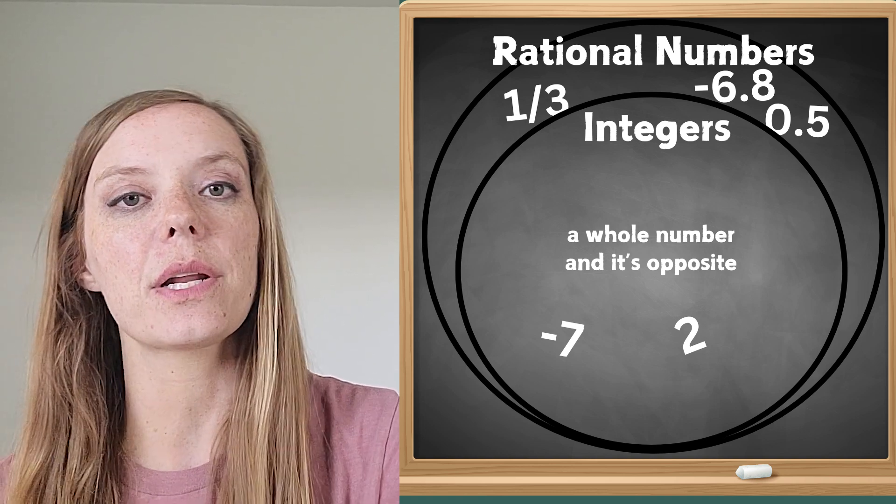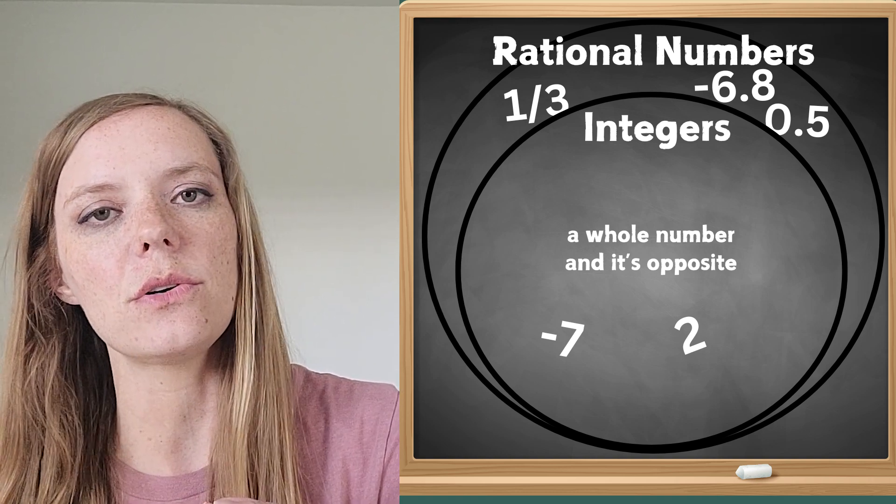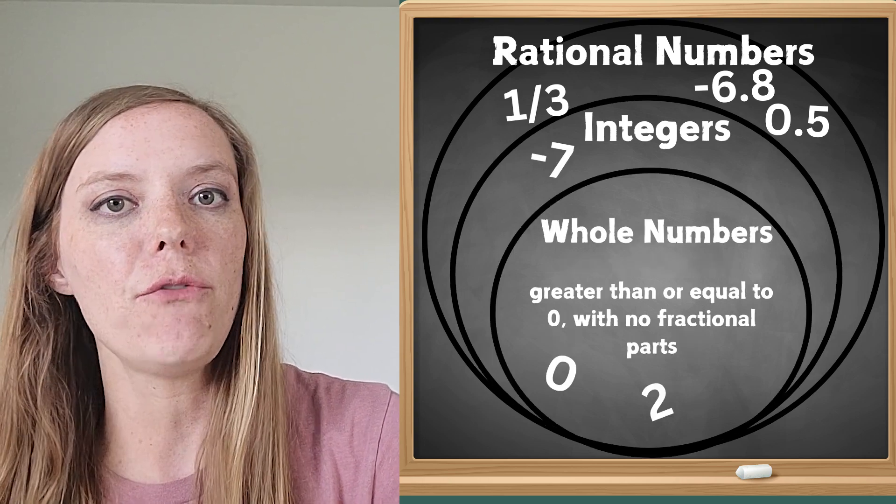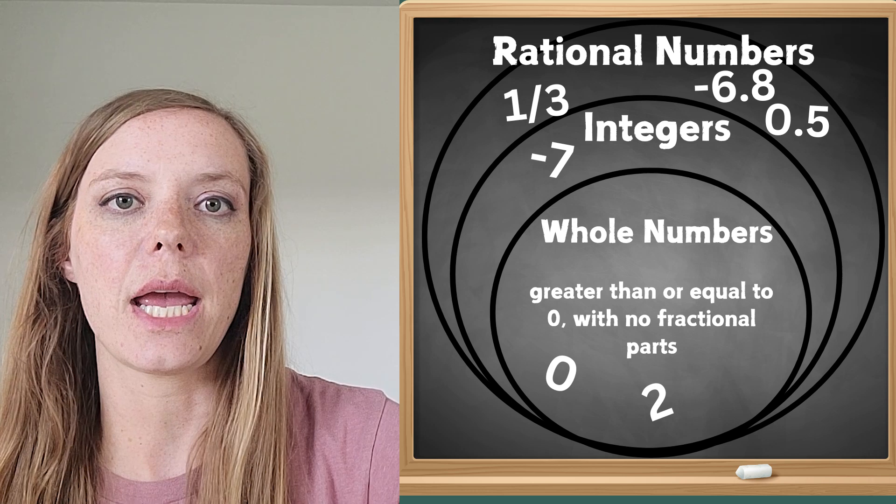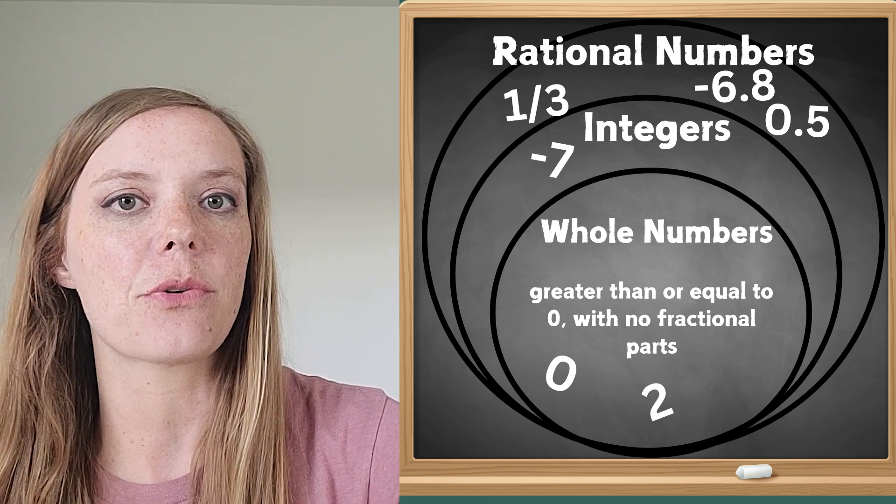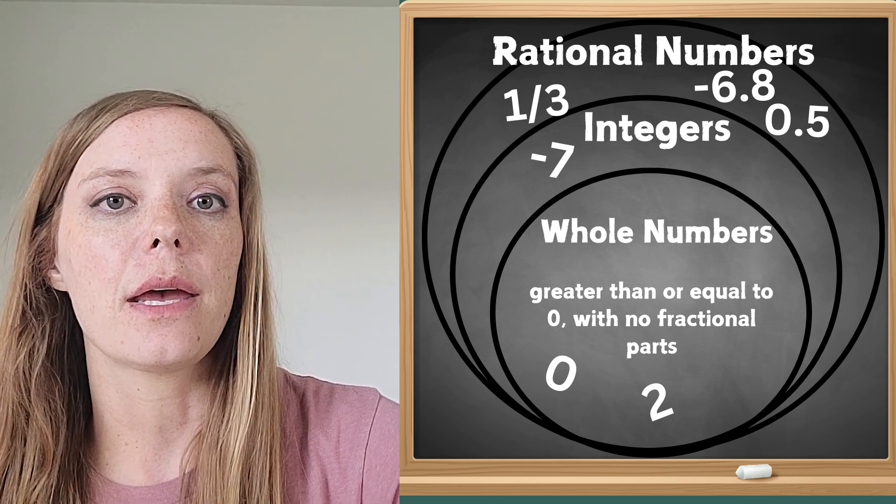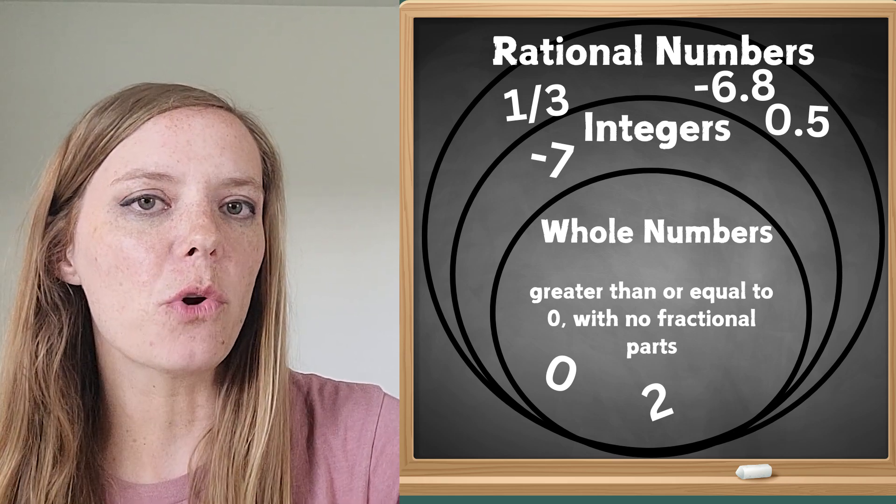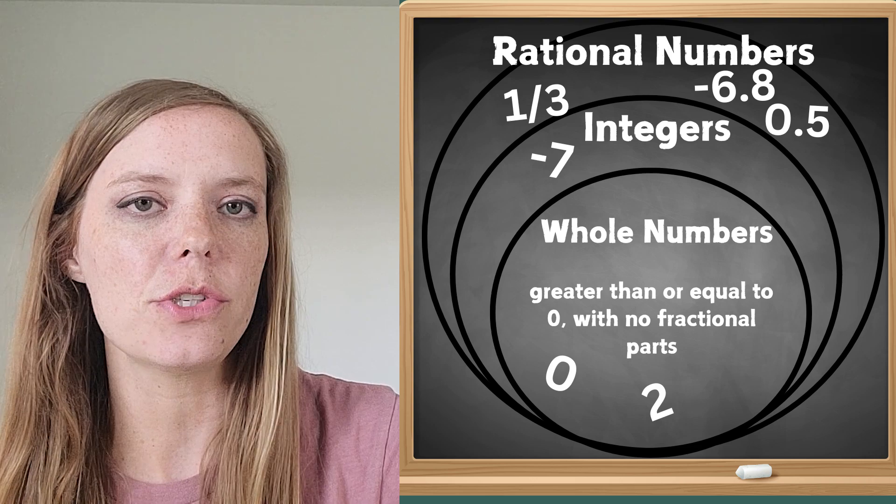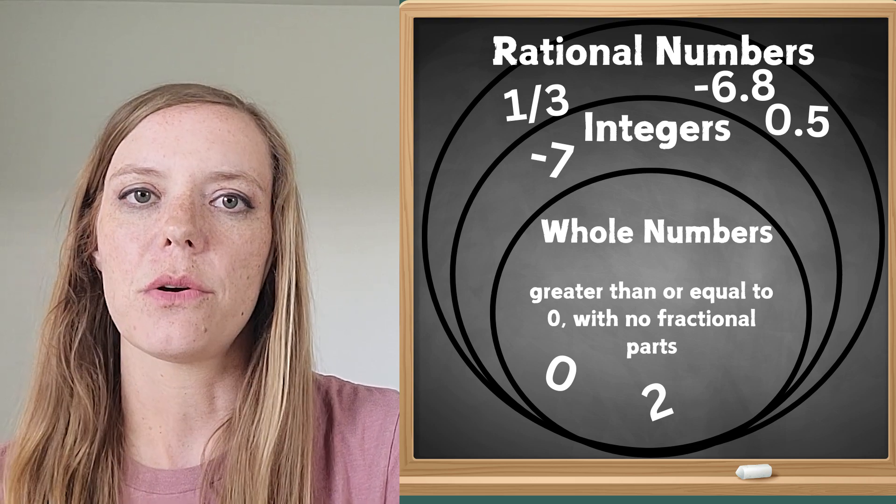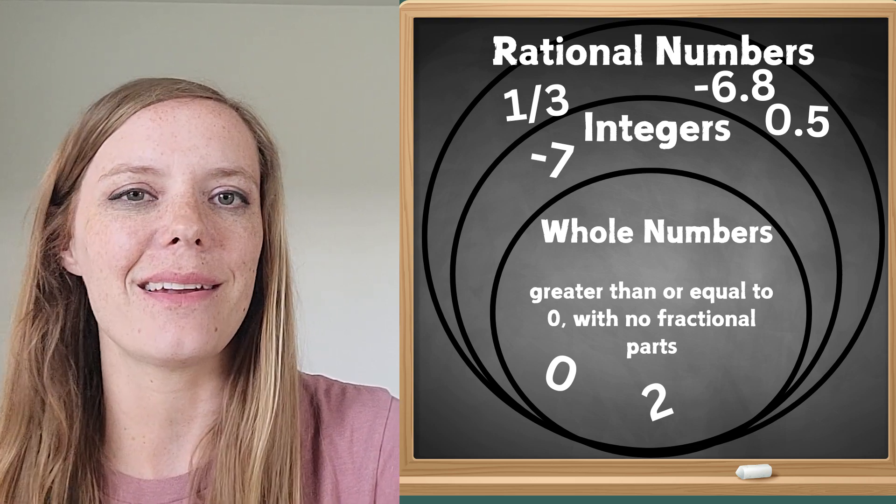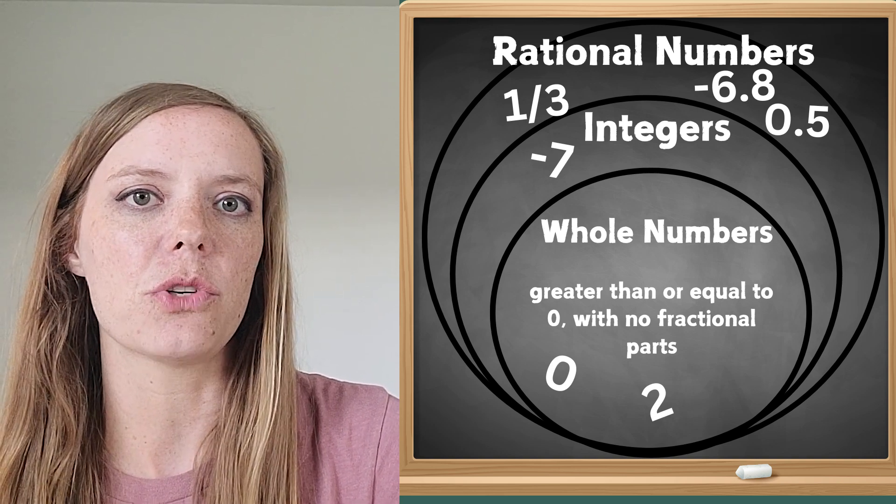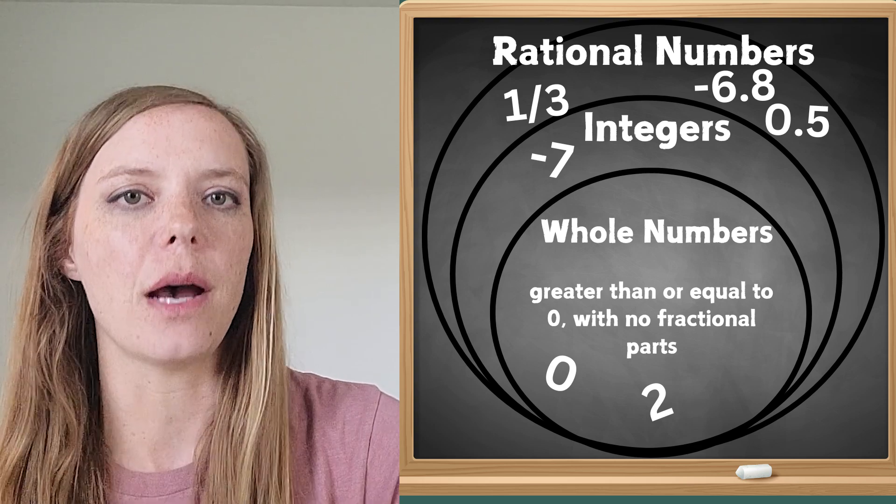All right the next category, we're going to keep going inside the circles and the next one is whole numbers. So the definition of whole numbers is just a number that is greater than or equal to zero and no fractional or decimal parts. So it's more specific than integers because integers included those positive and negative. So this is just greater than or equal to zero. So zero and up.